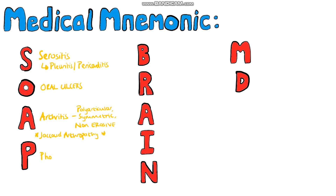P is for photosensitivity. B stands for blood, and this includes pancytopenia because you can have anemia, thrombocytopenia, and leukopenia. R is for renal damage.